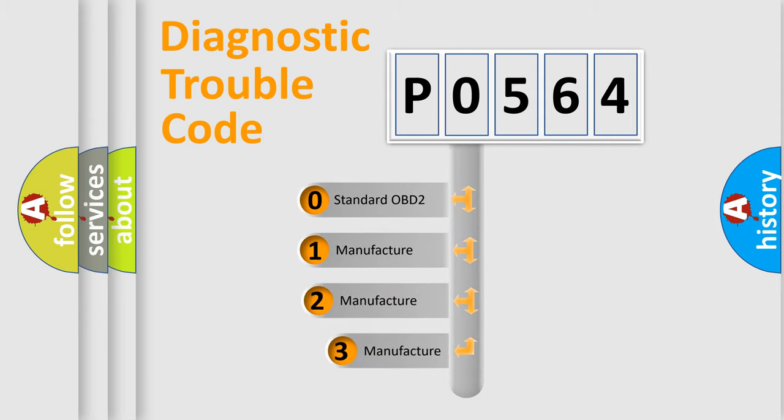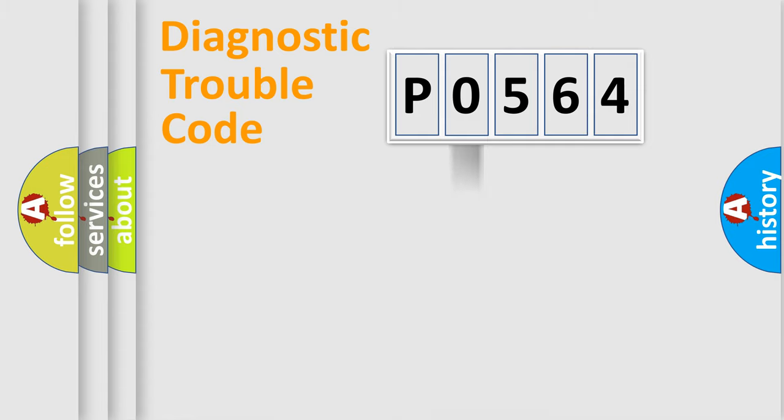If the second character is expressed as zero, it is a standardized error. In the case of numbers 1, 2, or 3, it is a manufacturer-specific expression of the car-specific error.